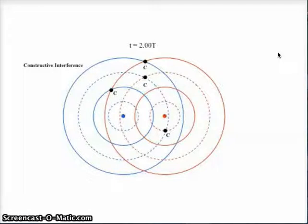We have several constructive interference locations, where it's either solid lines meeting solid lines, or dashed lines meeting dashed lines.